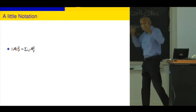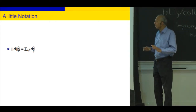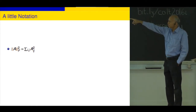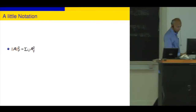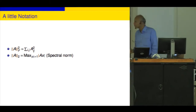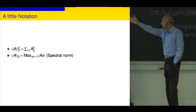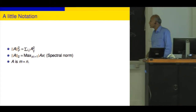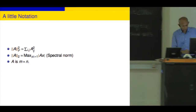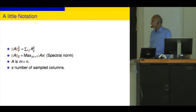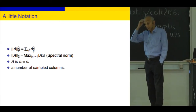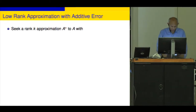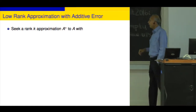A little notation. The Frobenius norm is the sum of squares of all the entries. The spectral norm (sub-two) is the operator norm. A is always M×N, and S is always the number of sample columns — S for sample.